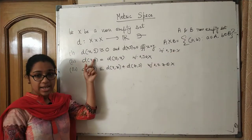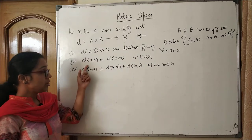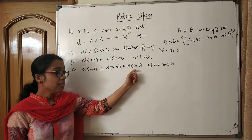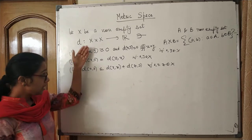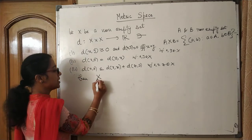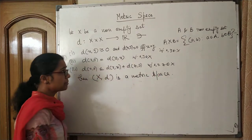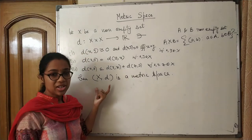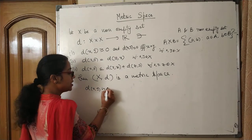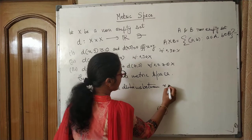These three properties must be satisfied by D. Then we say X together with this D is called a metric space. D(x, y) is called the distance between x and y.